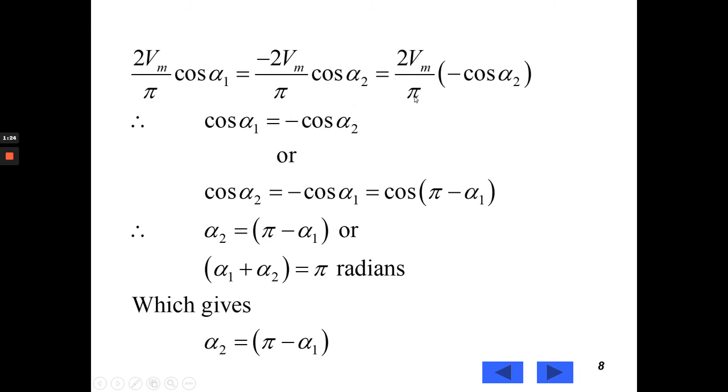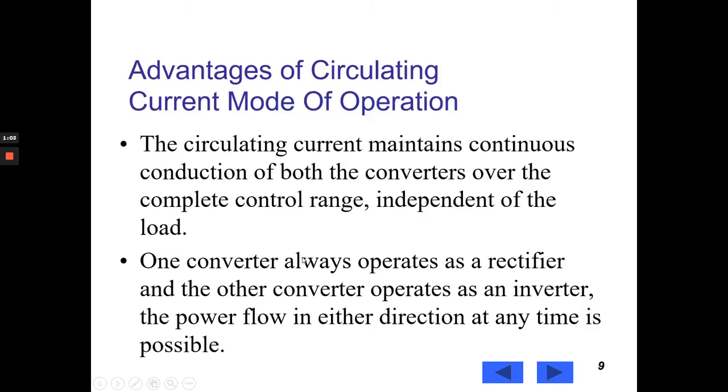It is nothing but 2Vm by pi minus cos alpha 2. That is cos alpha 1 equal to minus cos alpha 2 or cos alpha 2 equal to minus cos alpha 1. That is nothing but cos of pi minus alpha 1. Now, see left hand side and right hand side. We can say that alpha 2 equal to pi minus alpha 1.